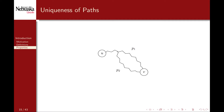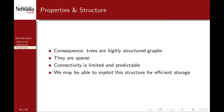You could extend this argument further for scenarios in which two vertices are connected by two paths that share some sequence of vertices. At some point the paths must diverge, and this again forms a cycle. As an immediate consequence of these two properties, we can observe that trees are highly structured graphs. Since there are only a linear number of edges, they are also sparse graphs, thus connectivity is limited and predictable. We may be able to exploit these properties to design an efficient data structure.